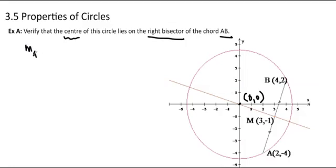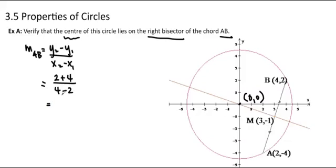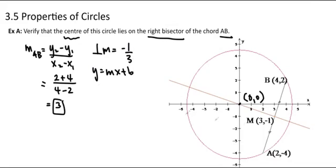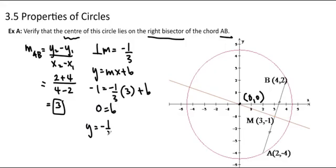First I'm going to find the slope of AB — don't forget to write the equation nice and neat. It's y2 minus y1 over x2 minus x1. So 2 minus negative 4 over 4 minus 2, which gives us 6 over 2, so that's 3. The perpendicular slope is going to be negative 1 over 3, the negative reciprocal. So we're going to use y equals mx plus b. The y is negative 1 and m is negative 1 third times 3 plus b. So negative 1 third times 3 is negative 1, so negative 1 plus 1 equals 0. We get y equals negative 1 third x.